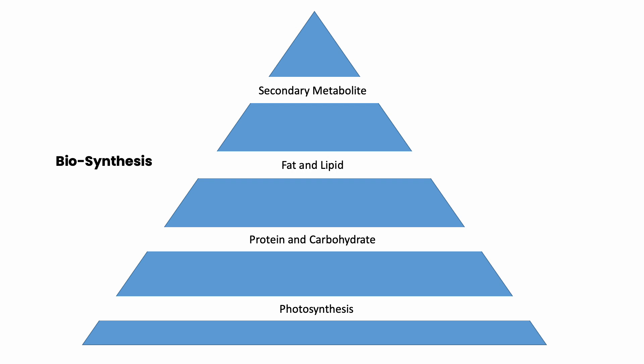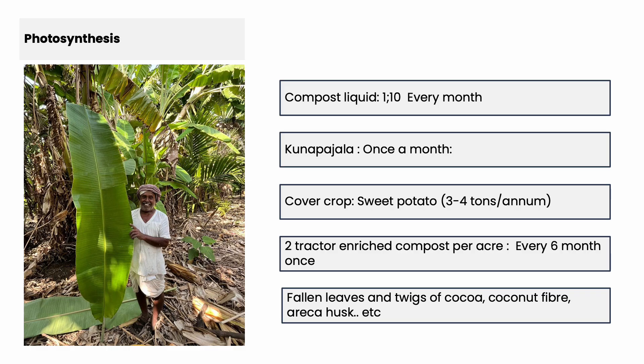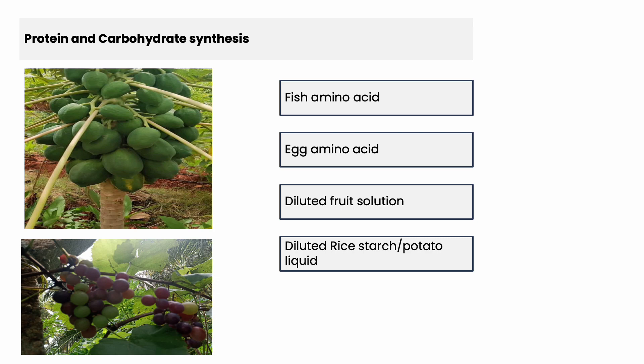We see biosynthesis happening in four stages. There is the Liebig-Loff theory of 17 essential nutrients, but there is also a biosynthesis theory. We go with photosynthesis, protein and carbonyl synthesis, acid-lipid synthesis, and secondary metabolite synthesis. To achieve photosynthesis, look at the leaf area — it is more than 7 to 8 feet. The color is fantastic. Photosynthesis is enhanced by spray of compost liquids, kunapajala, cover crops, regular compost application, and fallen leaves and twigs which act as liquid compost. For protein and carbonyl synthesis, we use fish amino acids, vegan acids, diluted fruit solutions, and potato or other carbonyl solutions.